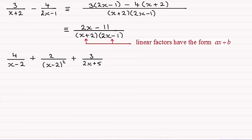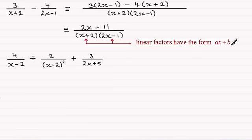Linear factors have the form ax + b, where a and b are constants. You can see in this one we've got 1·x + 2, so a would be 1 and b would be 2. And in this one, 2x - 1, the a would be 2 and the b would be minus 1.